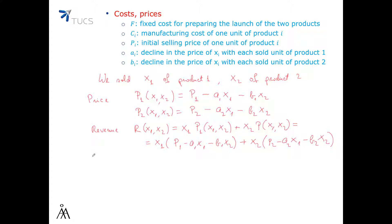And the cost is C(x1, x2) which is the fixed cost plus how much we paid for producing x1, so C1 times x1, plus how much we paid for producing x2 which is C2 times x2. And so the objective is maximize the function f(x1, x2) which is the revenue minus the cost.